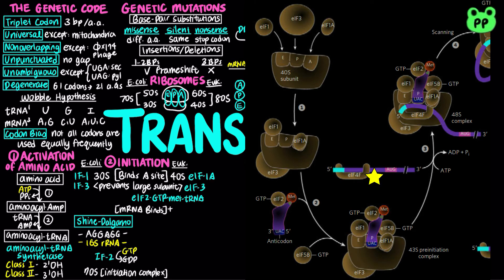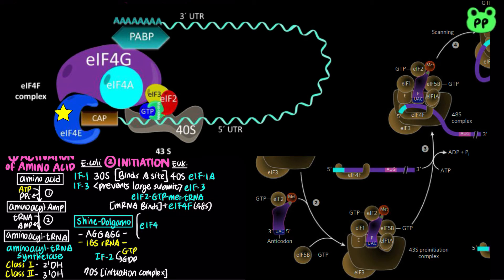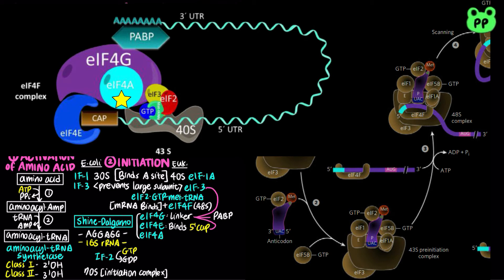EIF4F and mRNA then bind the 43S pre-initiation complex. EIF4F consists of three components. EIF4G is a linker protein between EIF3 and EIF4E, which binds to the 5' cap of mRNA. EIF4G also binds to poly-A binding protein at the 3' end of mRNA, circularizing the mRNA and facilitating translational regulation of gene expression. EIF4A is an ATP-dependent RNA helicase that removes secondary structure in mRNA to permit binding at the 40S subunit.